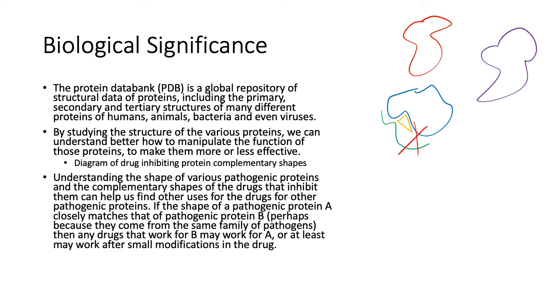Understanding the shape of various pathogenic proteins and the complementary shapes of the drugs that inhibit them can help us find other uses for the drugs for other pathogenic proteins. In other words, if you have one coronavirus and another coronavirus, we found a drug that works on this coronavirus—let's see if it works on this coronavirus. You can look at the proteins on the surfaces of those viruses and say, okay, this is how it attaches. Are they the same? Yes, they are. No, they're not. And then the drugs may or may not work in that way.